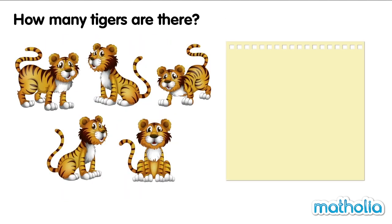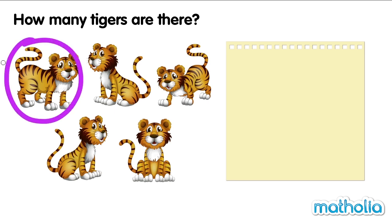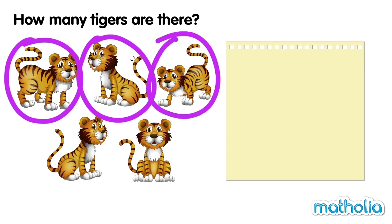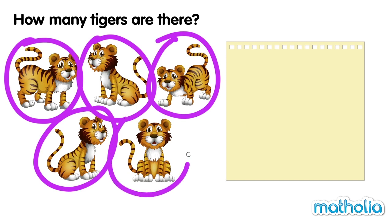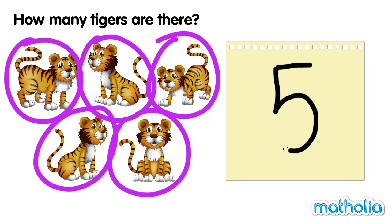How many tigers are there? One. Two. Three. Four. Five. There are five tigers. Five.